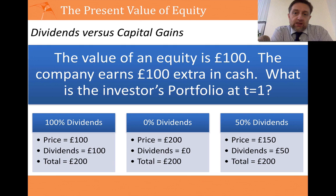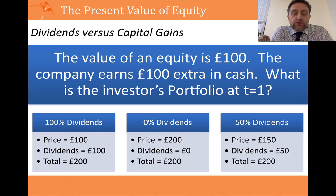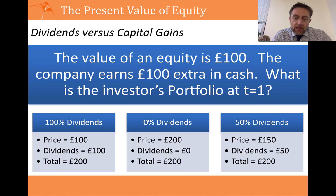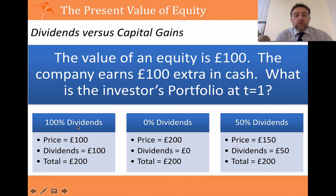I'm going to use a very simple example here. Let's assume that the value of an equity is £100 and you only have one share, so the value of the company is £100. The company then earns an extra £100 in cash. We're going to look at three different scenarios: one where the company pays everything out in dividends — that's option A — another where the company doesn't pay any dividends at all and just keeps all the money — that's option B.